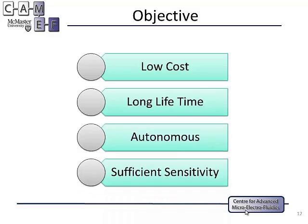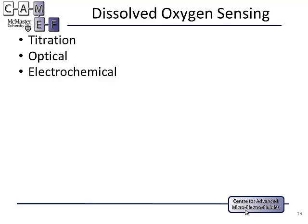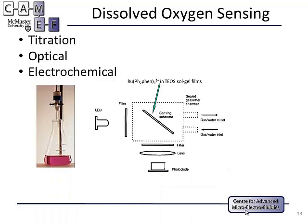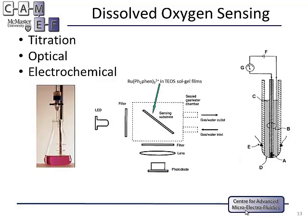So if we can lower the cost of our sensor and also increase its lifetime, we can probably overcome those challenges. On top of that, we also want our sensor to collect data automatically and have sufficient sensitivity. There are three typical ways for dissolved oxygen sensing: the titration method, the optical method, and the electrochemical method.